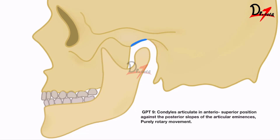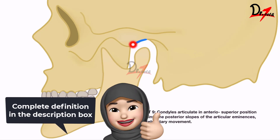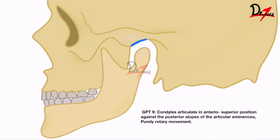In GPT-7, there are many definitions — approximately seven — and none of them are considered incorrect. Moving forward to the latest edition, GPT-9, it states that in centric relation the condyles articulate in the anterior superior position against the posterior slope of the articular eminence. They removed the disc from the definition and simply stated that the condyles articulate in the anterior superior position against the posterior slope of the articular eminence, with a purely rotary movement in this position.